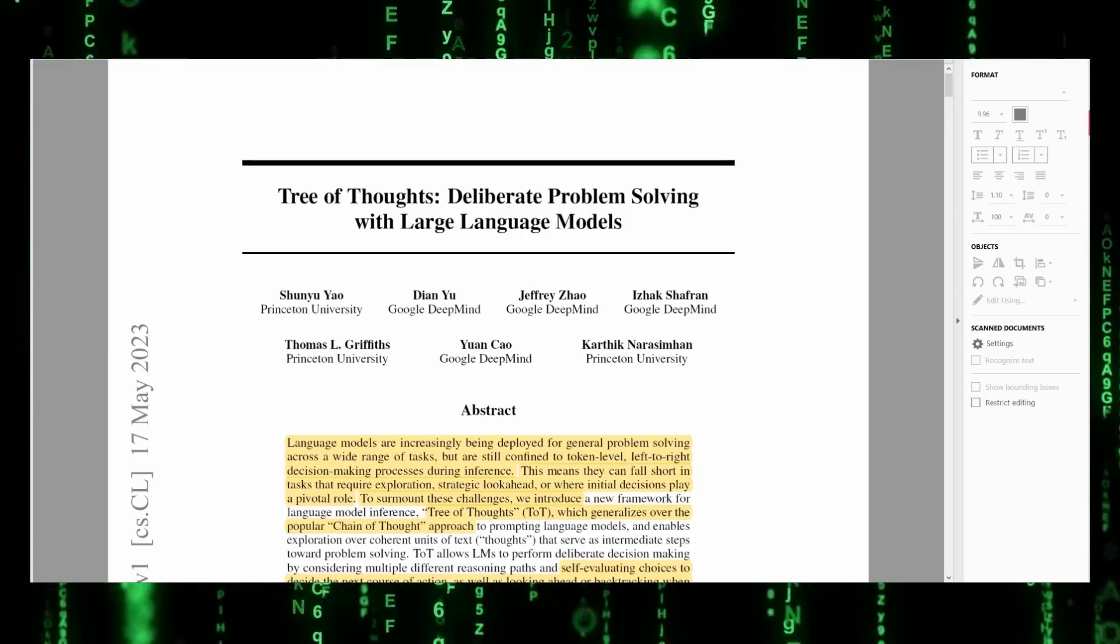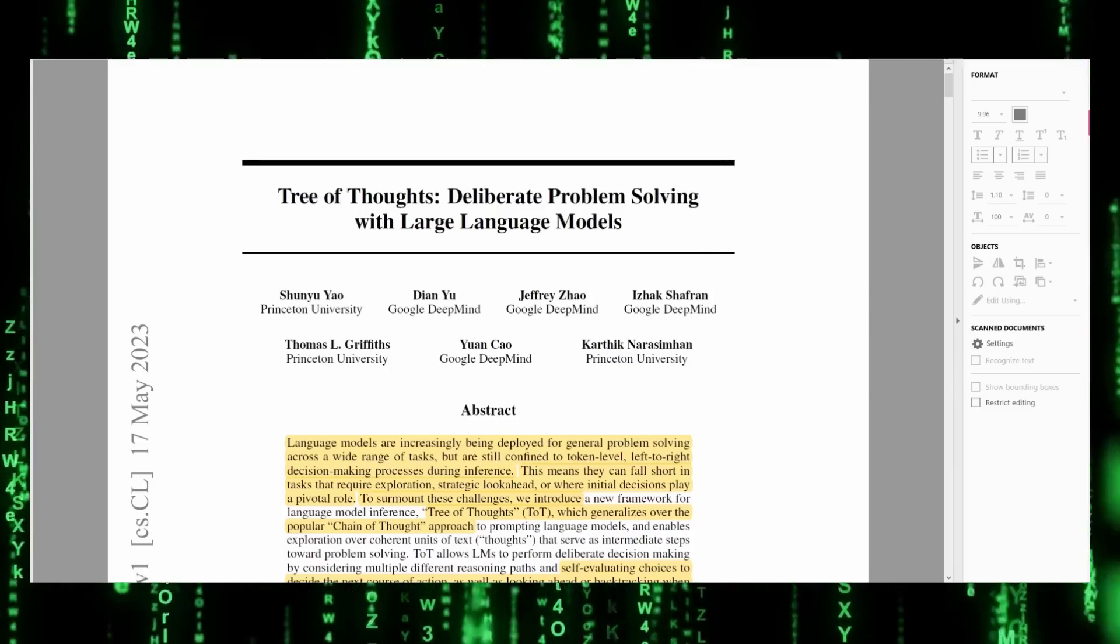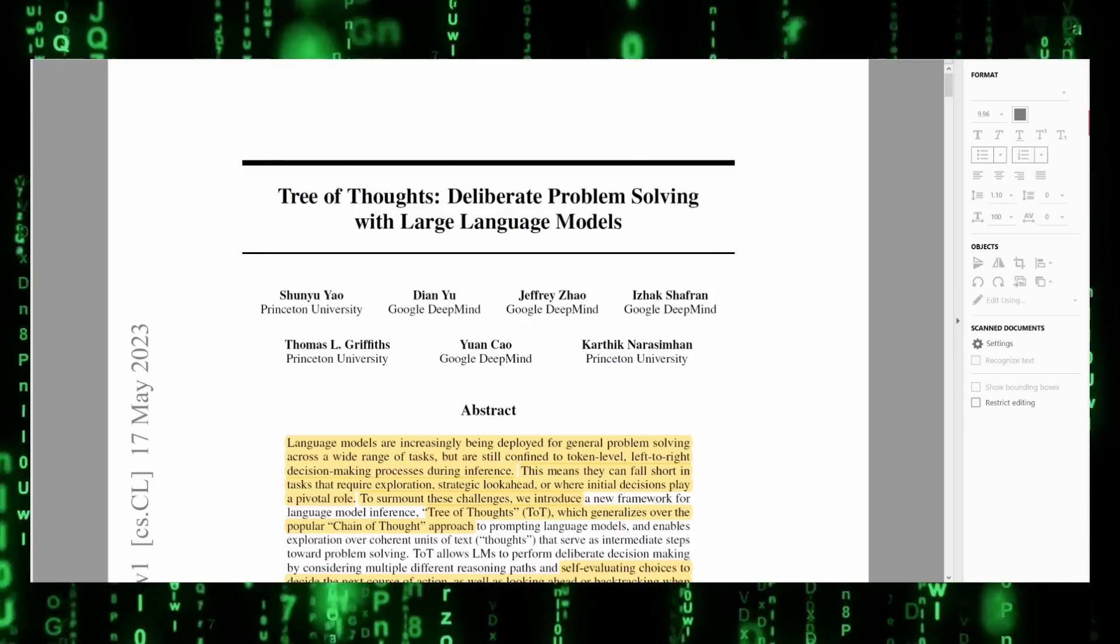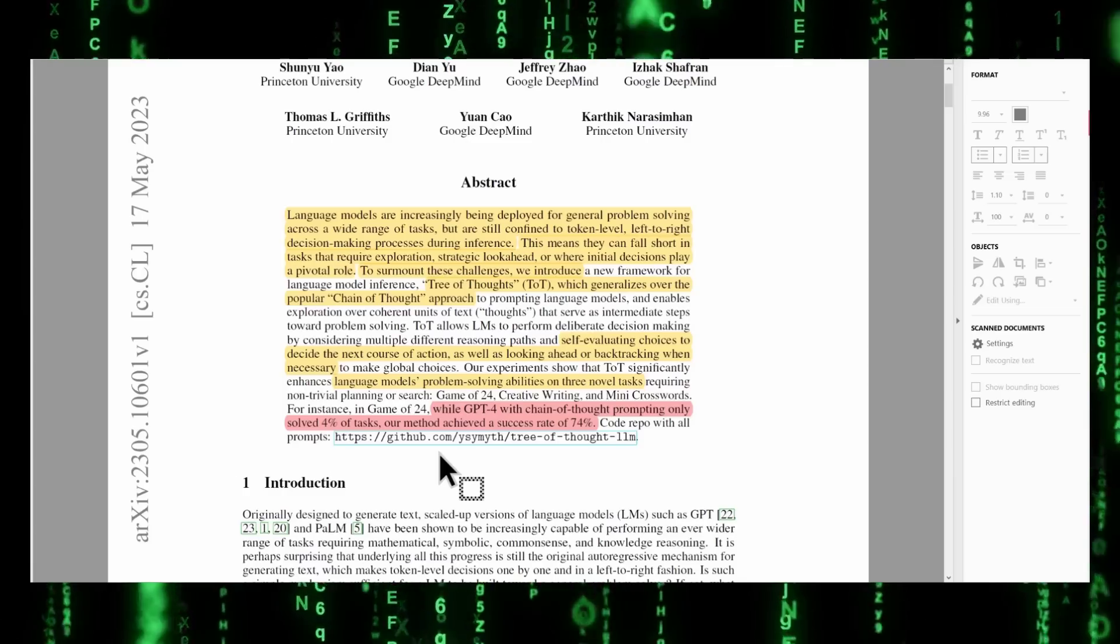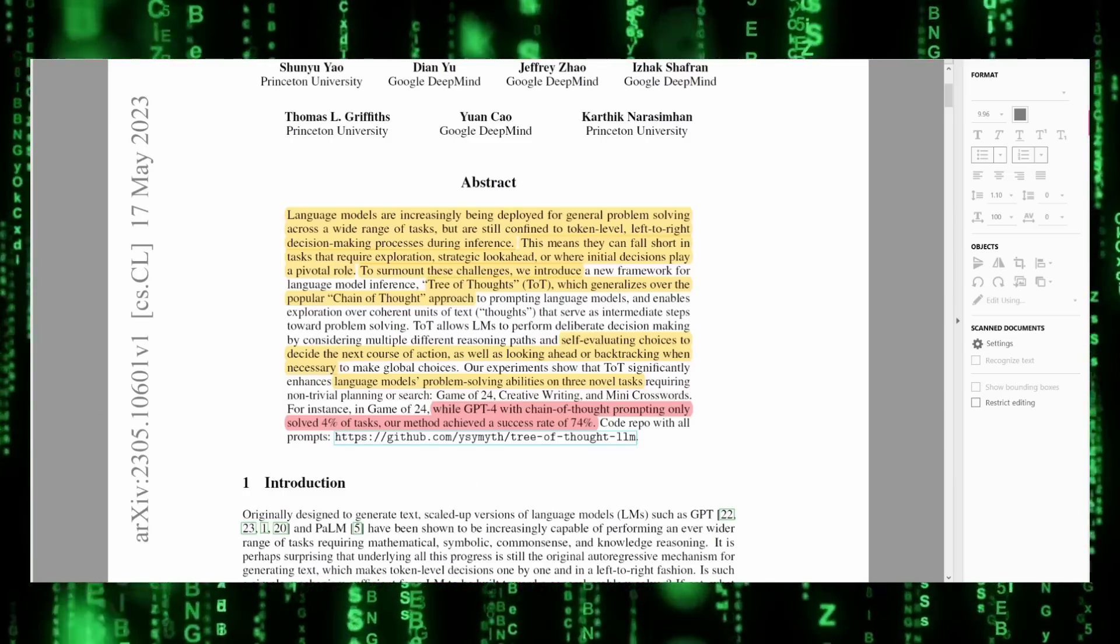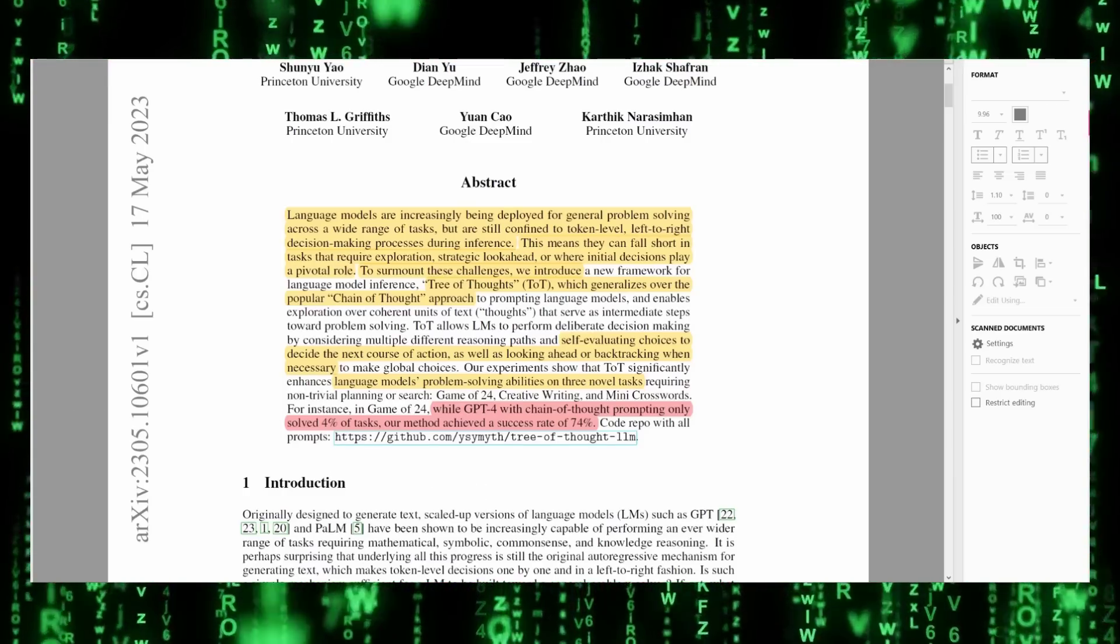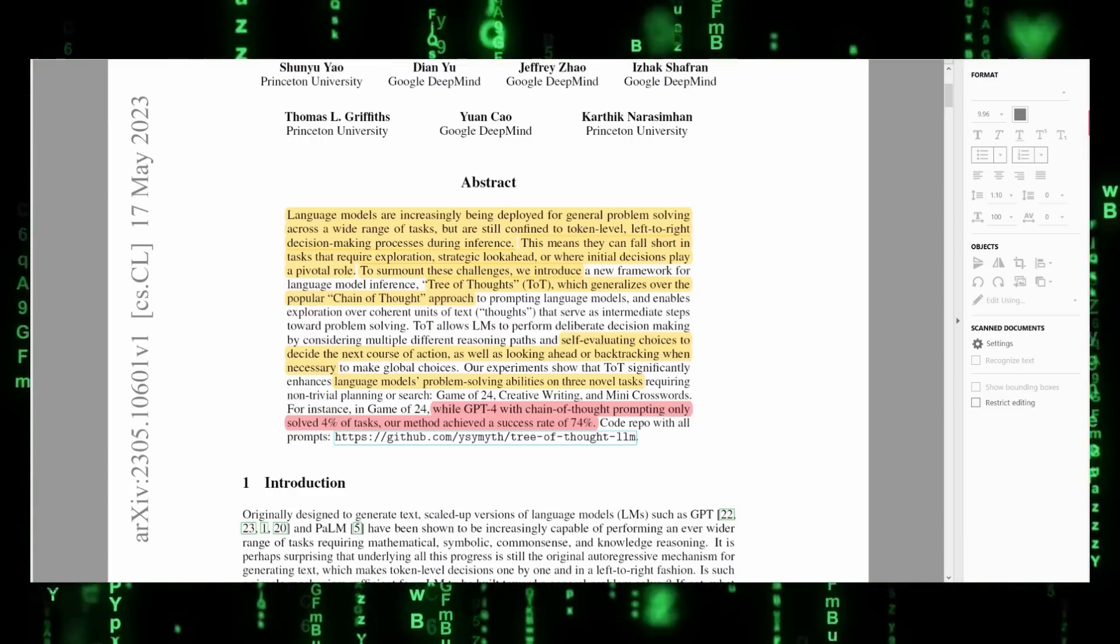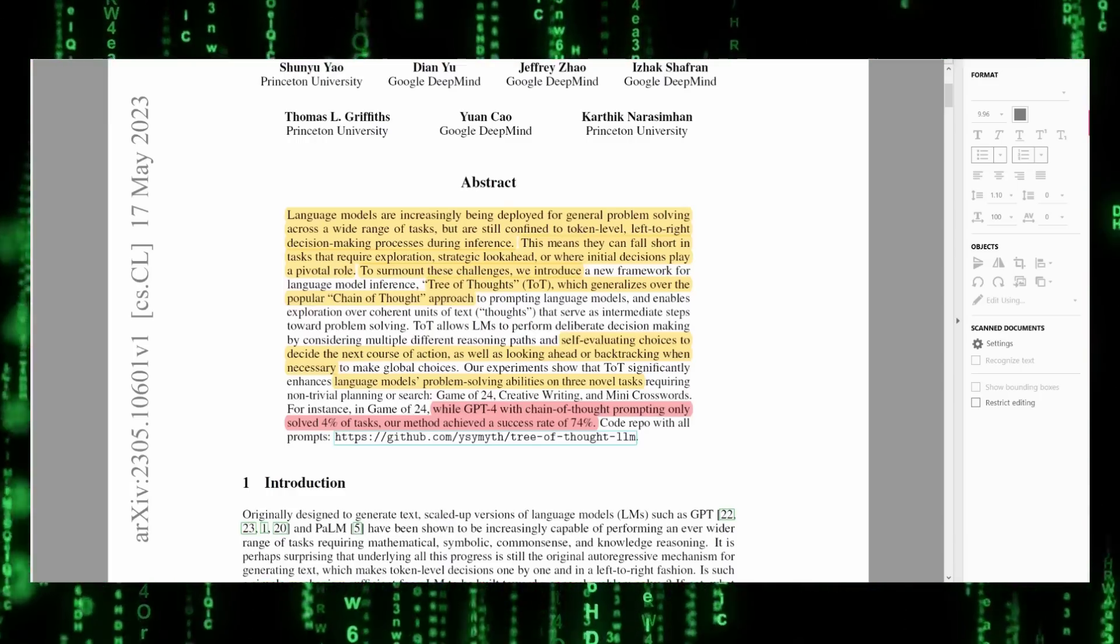You may have heard that saying we only use 10% of our brain. Whether or not that's true, this paper seems to show that it is true for our current AI models. This new approach took ChatGPT's ability to solve complex problems from 4% to 74%, just from a new way of prompting it called Tree of Thoughts, or TOT, as it's referenced in the paper.